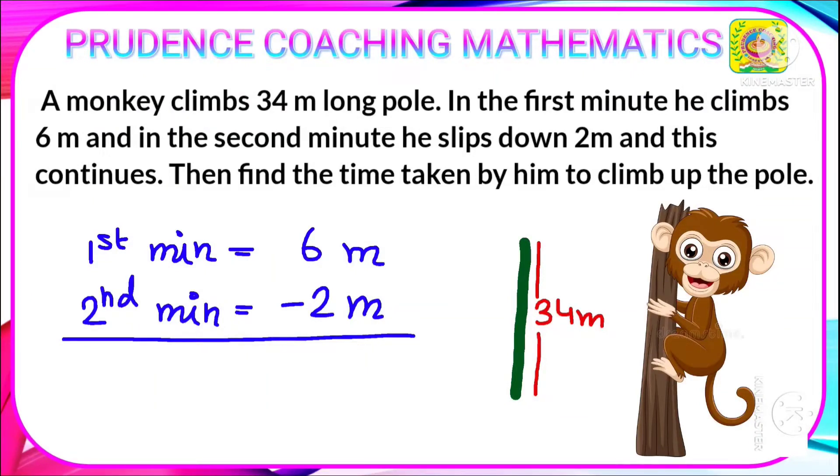As requested by one of the students of our channel, we are going to solve the sum. A monkey climbs a 34 meter long pole. So the length of the pole is 34 meters.